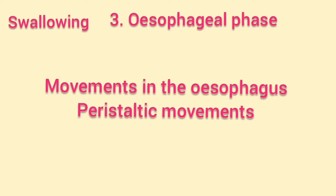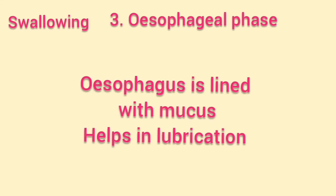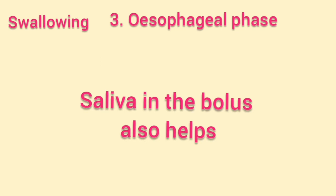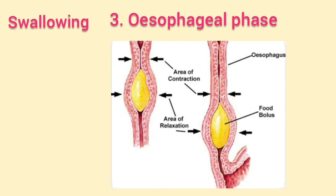The movement in the esophagus is called peristaltic movement. The walls of the esophagus secrete a slippery substance called mucus, which lubricates the esophageal walls, protects them from damage, and helps the food bolus slide down easily. The walls of the esophagus are made up of smooth muscles — the inner layer consists of circular muscles and the outer layer consists of longitudinal muscles.